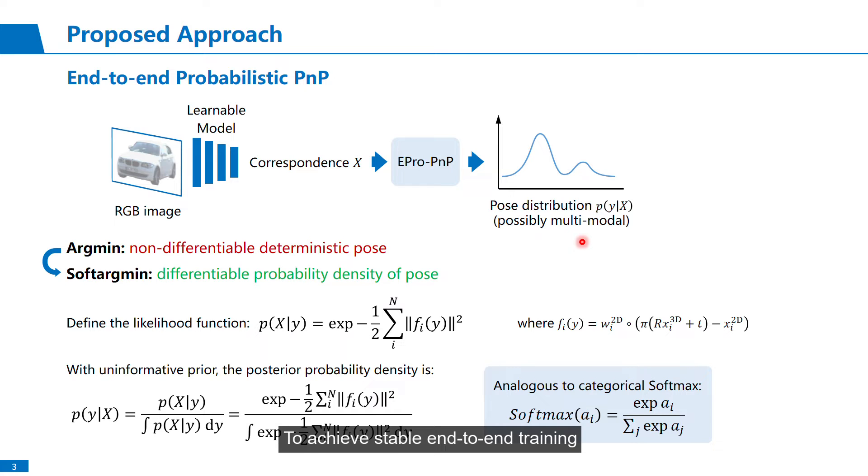To achieve stable end-to-end training, our workaround is to interpret the pose as a probability distribution, so we are actually predicting the probability density, which is always differentiable.